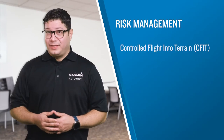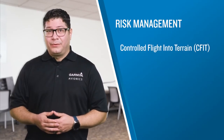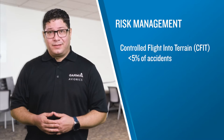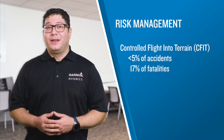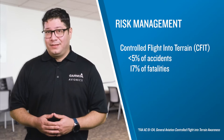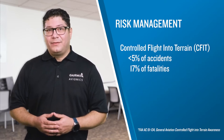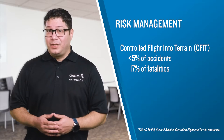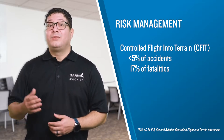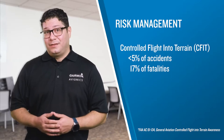Controlled Flight into Terrain, or CFIT, is responsible for fewer than 5% of all general aviation accidents, yet it's responsible for 17% of general aviation fatalities. In recent decades, these types of adverse events have averaged slightly more than 100 per year in the U.S., resulting in nearly 2,000 fatalities each year. A review of available research makes it clear that CFIT accidents primarily occur due to a lack of situational awareness, and most often occurs when visibility is restricted by atmospheric conditions or darkness.